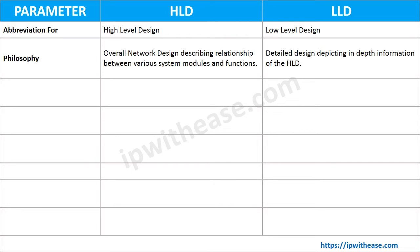Talking about the philosophy of both terms, HLD is called an overall network or system design describing the relationship between various system modules and functions. LLD is a detailed design depicting in-depth information of the HLD.